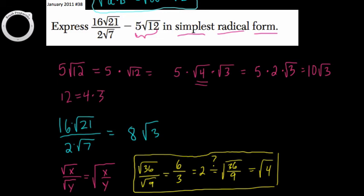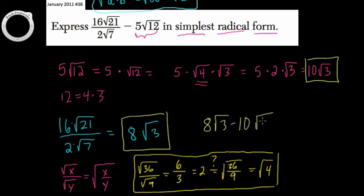All that being said, we're basically done. But instead of the first fraction, we have 8 times the square root of 3. Instead of the second fraction, we have 10 times the square root of 3. So here what we have is 8 square roots of 3 minus 10 square roots of 3, and that's just negative 2 square roots of 3. And that's our answer.